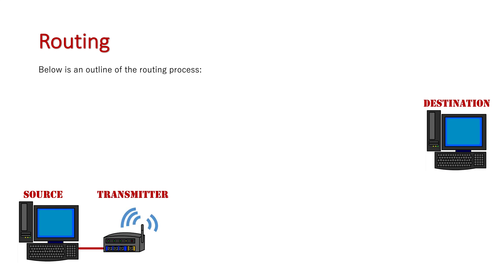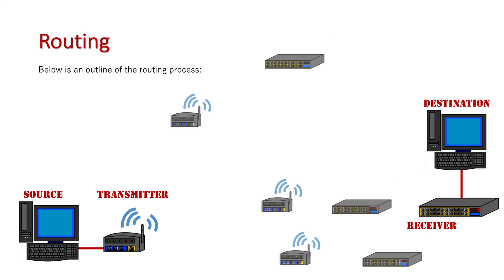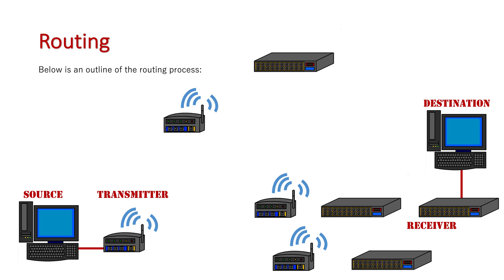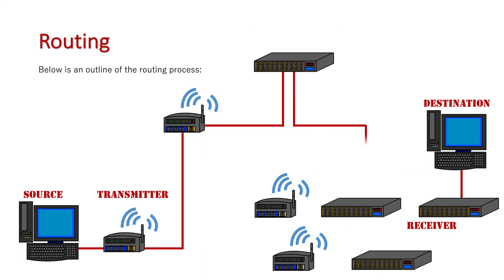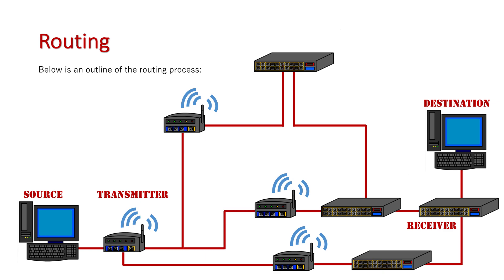Connected to the source we have a wireless router — that's its transmitter — and the destination is connected to a switch, which is its receiver. Here is our network and these are all the intermediate nodes that sit on it. There are multiple pathways the message can go through, and we have to decipher which is the best possible pathway to take to get this message from the transmitter of the source to the receiver of the destination.